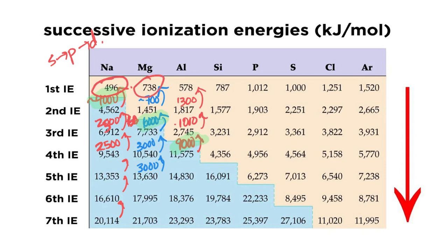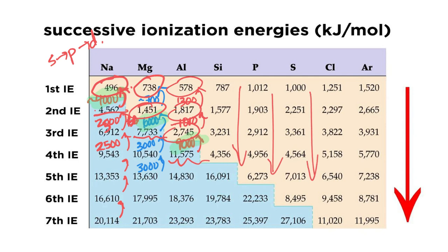about how many valence electrons there are. Sodium has one, so its next ionization energy is really big. Magnesium has two valence electrons, so the next ionization energy is really hard. Aluminum's got three valence electrons, and then that next jump is really big. This trend continues